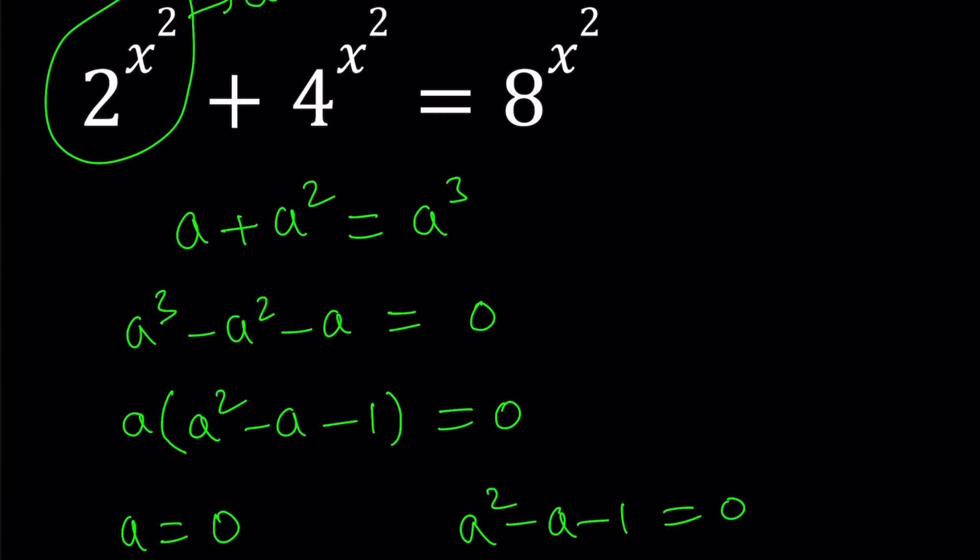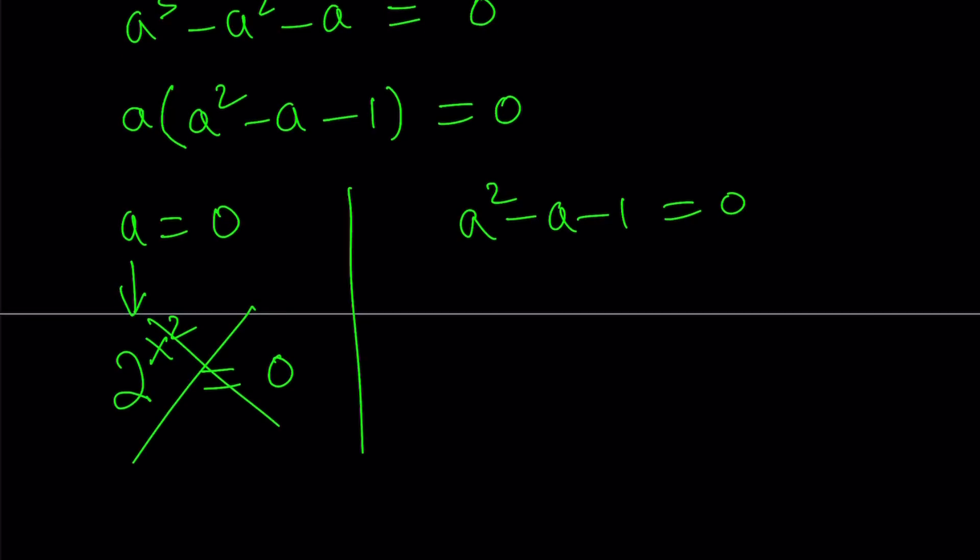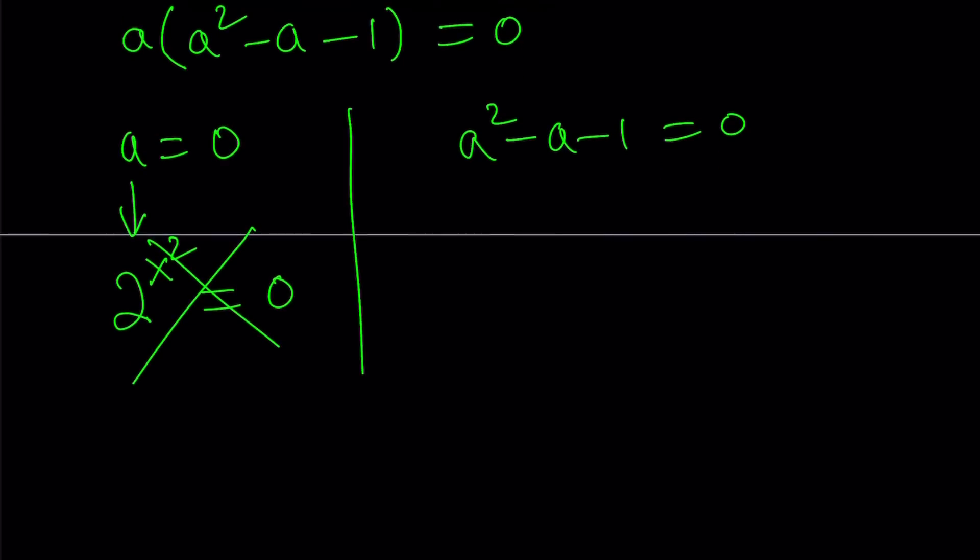Let's set aside the quadratic for now and focus on a equals 0. What is a? A is 2 to the power x squared. So let's back substitute: 2 to the power x squared equals 0. What is the x value? 2 to the power of 1 is 2, 2 to the power of 0 is 1, 2 to the power of negative 1 is one half. I can approach 0, but I can never be 0. So 2 to the power of x squared can never be 0. Even if x approaches negative infinity, this is not going to happen. There's no solutions. Forget about it. There are no solutions.